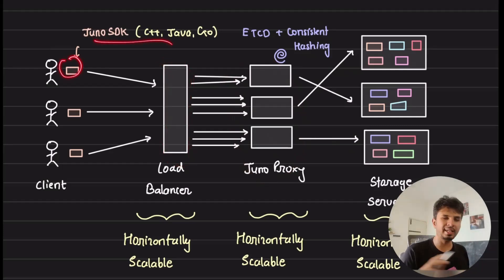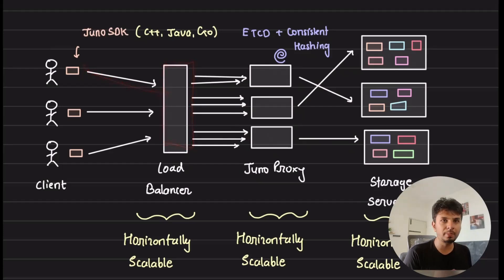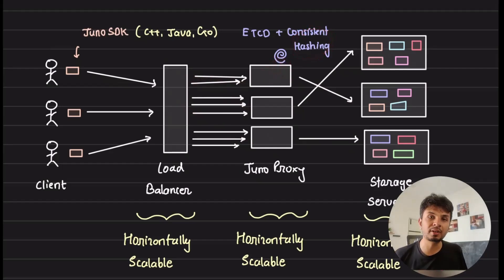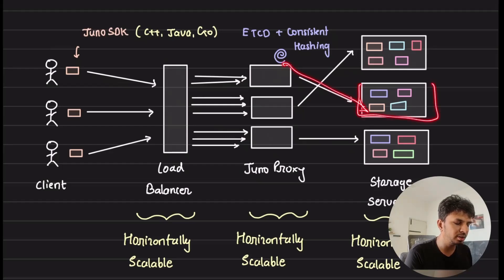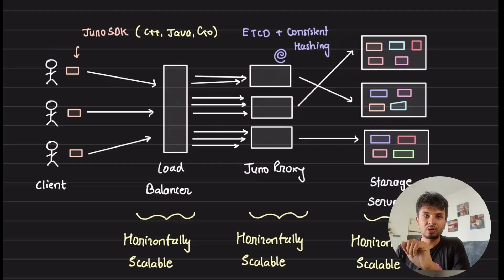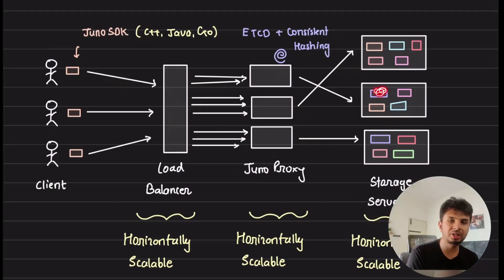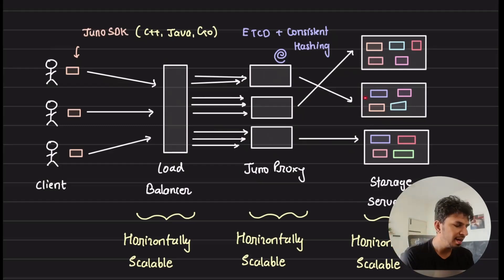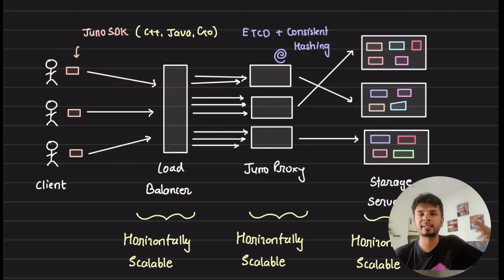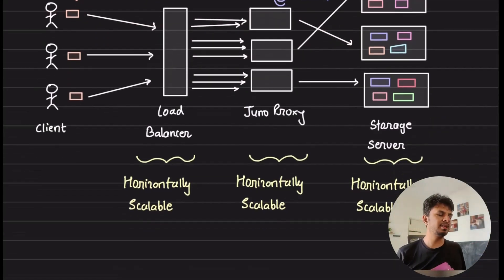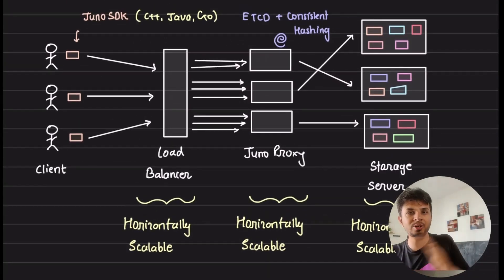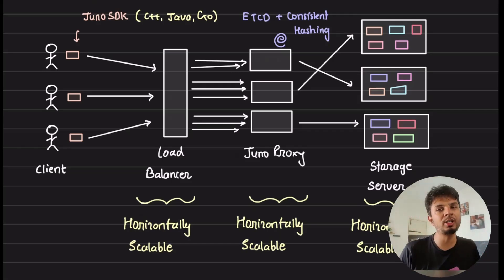To summarize the key components: requests from the Juno SDK (C++, Java, Golang, Node) go to the load balancer, which forwards to a Juno proxy. The proxy uses consistent hashing to determine which storage server to forward to. The storage server picks the shard for the key and performs the get, put, or delete on that RocksDB shard instance. The response travels back through proxy and load balancer to the client.